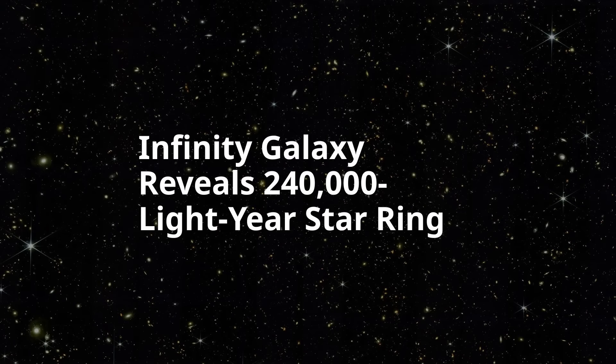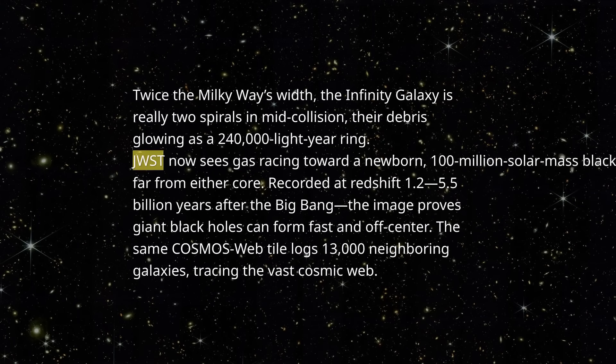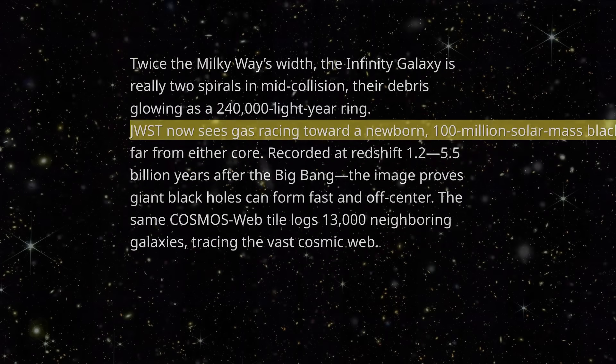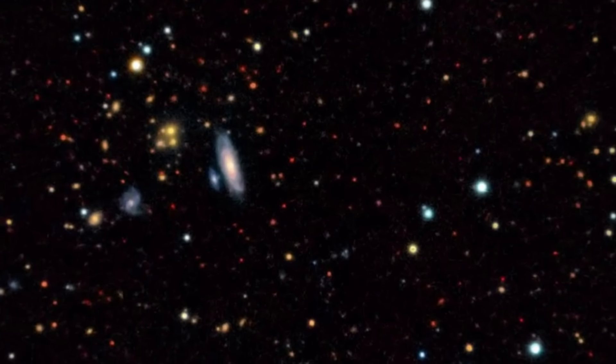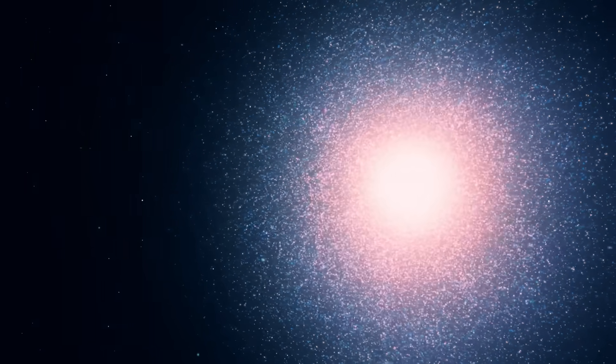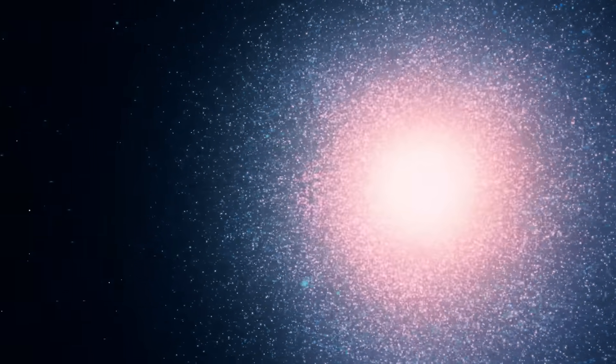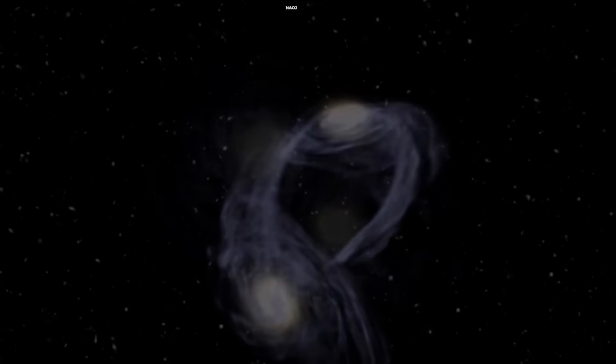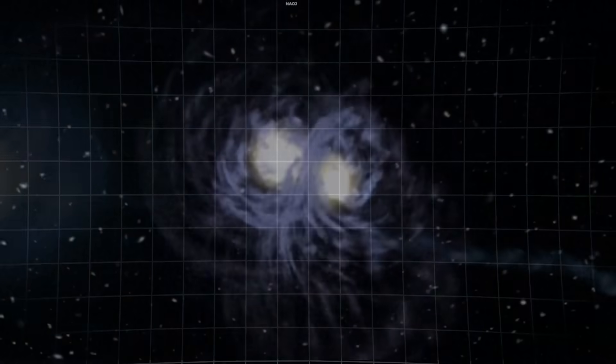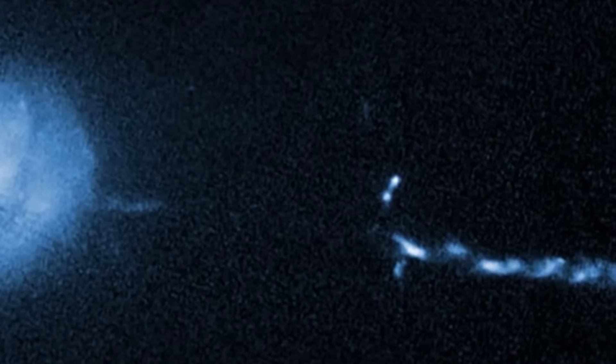The Infinity Galaxy stands as a testament to the power of a panoramic map. Only by surveying such a wide and deep field could astronomers spot such a fleeting, complex event. Its figure-eight form, with a black hole growing in the void between, hints that the universe's most massive engines may sometimes ignite not in the hearts of galaxies, but in the turbulent spaces where worlds collide.